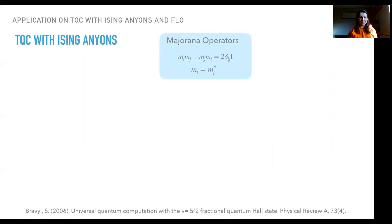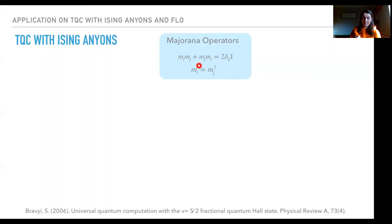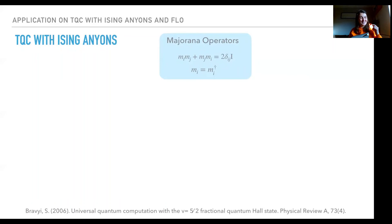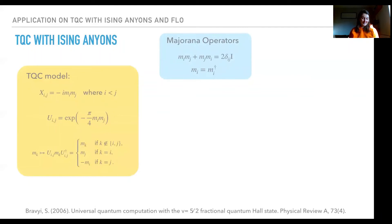The first application is topological quantum computing. First I need to briefly explain what a Majorana fermion is. Majorana fermions were proposed by Ettore Majorana as a solution to the Dirac equation, and they can be described by Majorana operators with an anti-commutation relationship. We don't have evidence that this particle exists as a fundamental particle, but these Majorana fermions appear in condensed matter physics, and especially in topological computing.